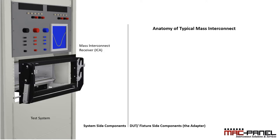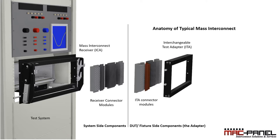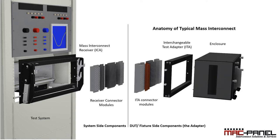The components of a typical mass interconnect system include: the mass interconnect receiver, or ICA; receiver connector modules; ICA connector modules; an interchangeable test adapter; an enclosure; and the connection to the DUT.